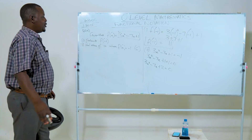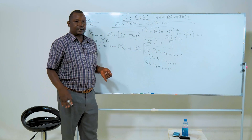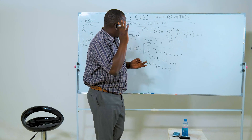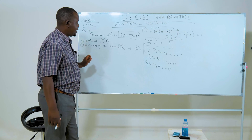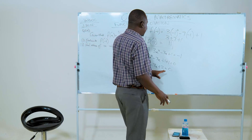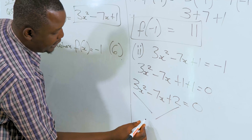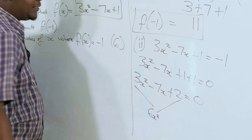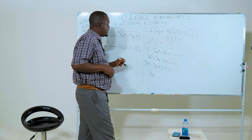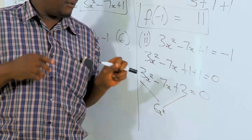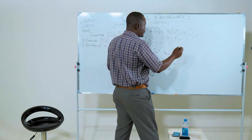Quadratic equations can be solved by factorization, the quadratic formula, the quadratic graph, or by completing the square, but we need the easiest method. Let's check if this equation can be factorized. We multiply 2 by 3 to get 6, and we look for two factors of 6x squared such that when we add them we get negative 7x and when we multiply we get 6x squared.